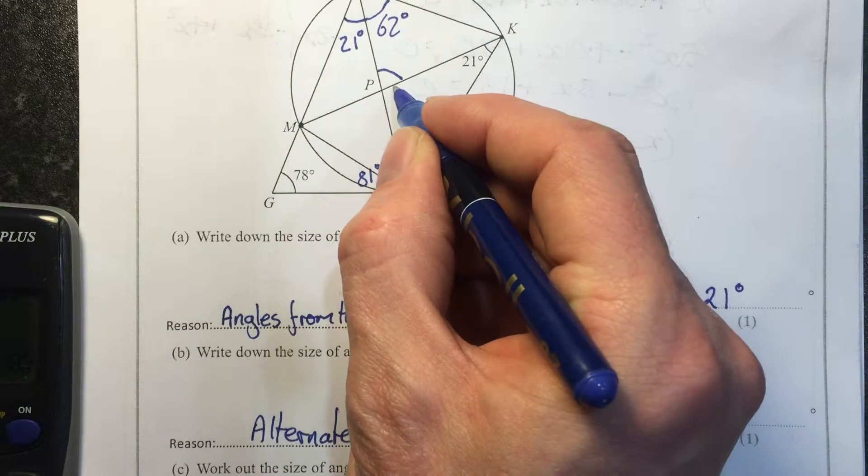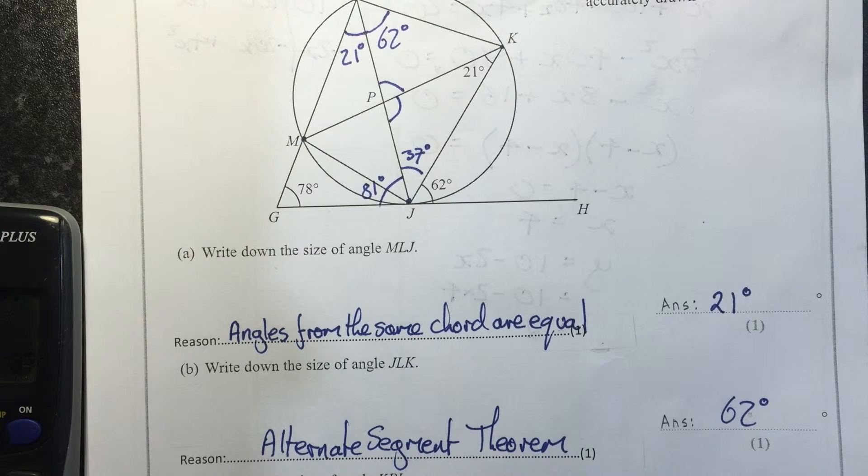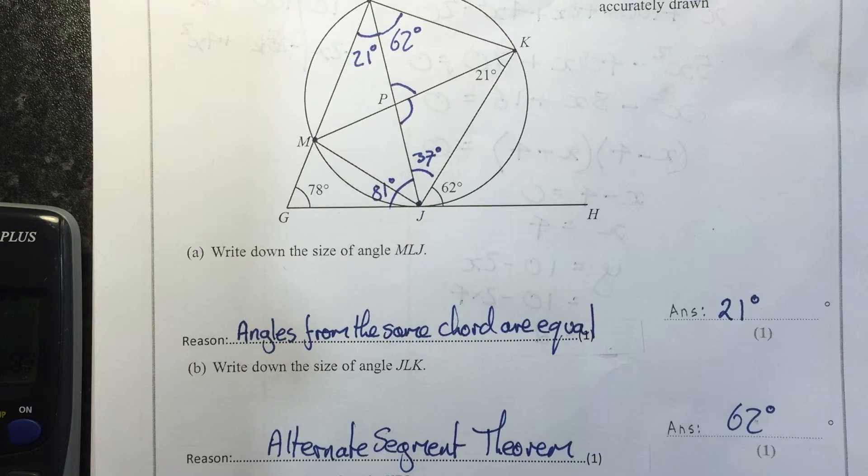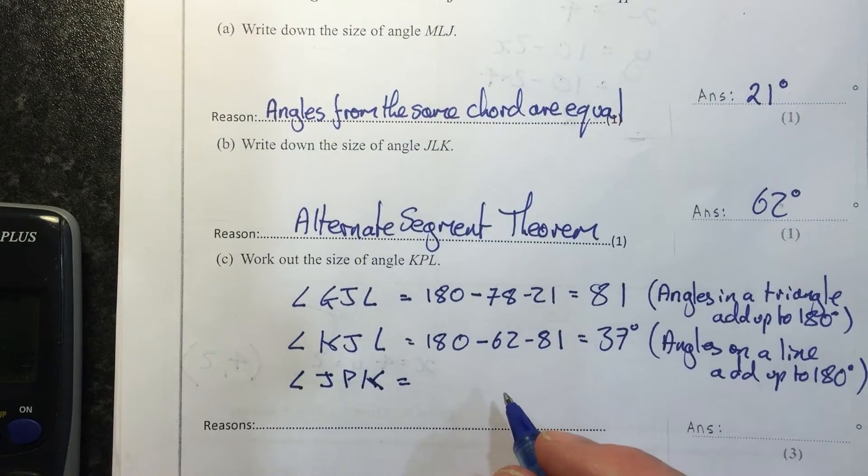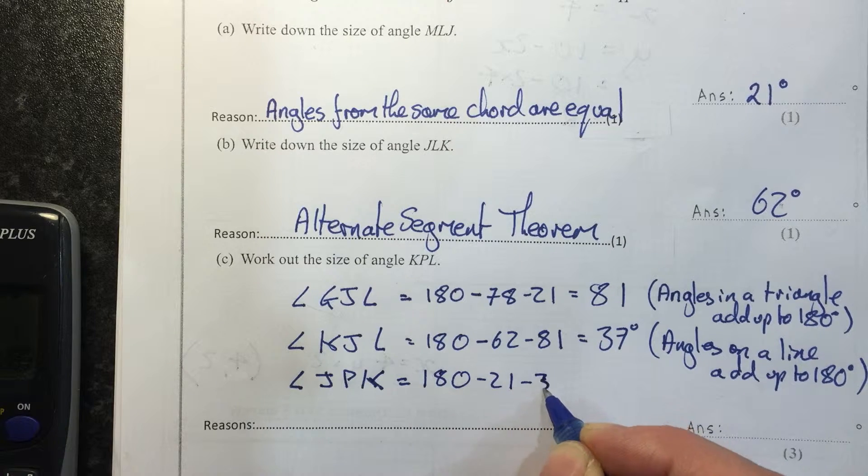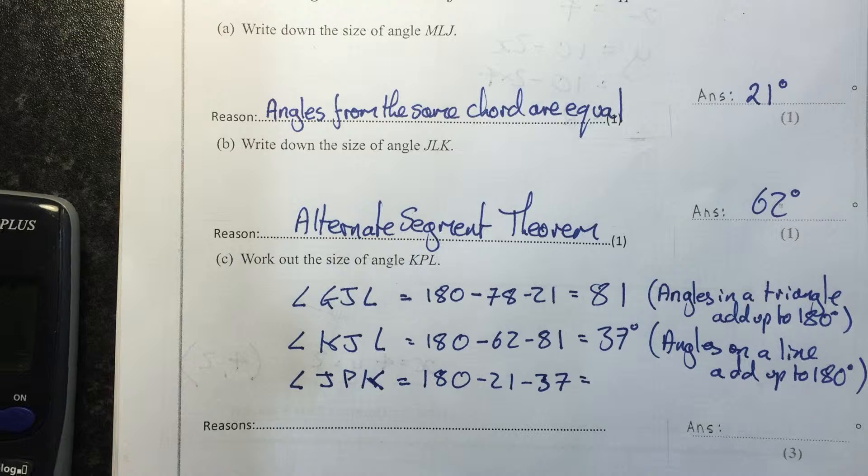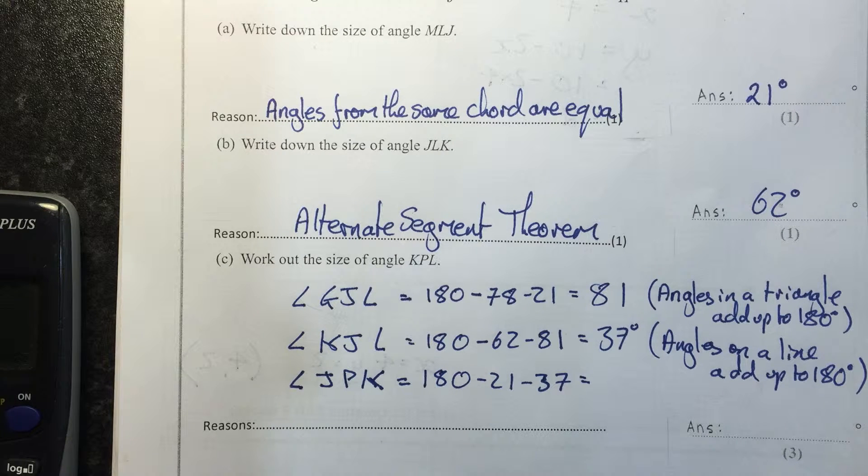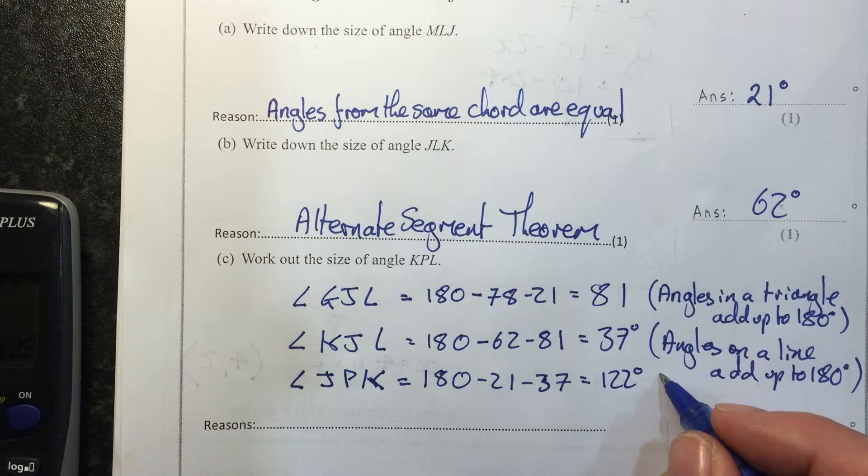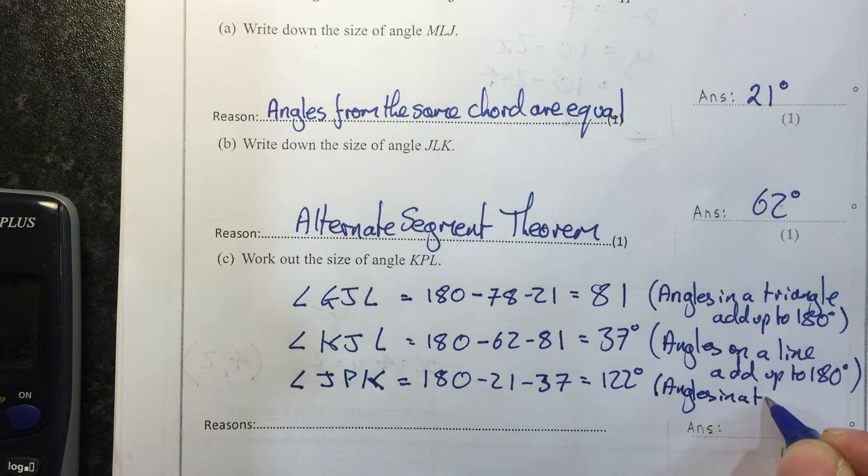Then we can work out this one, angle JPK. Could go directly to one, but this is the slightly more obvious way: 180 minus 21 minus 27 equals 122 degrees. This is angles in a triangle again.